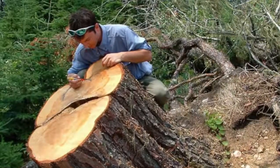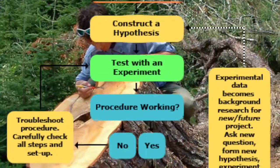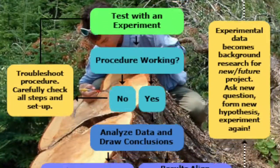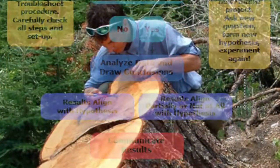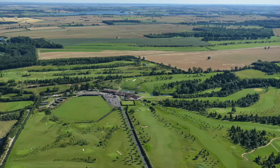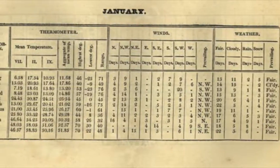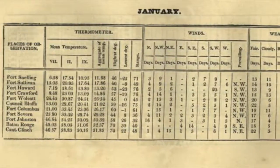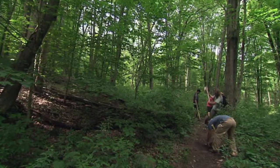Dendrochronology, like all other good science, is conducted in accordance with the scientific method. Dendrochronologists start off by asking a question similar to: what was the climate of a given area like in the past? They then form a hypothesis based on both direct records and indirect proxy records for that area.